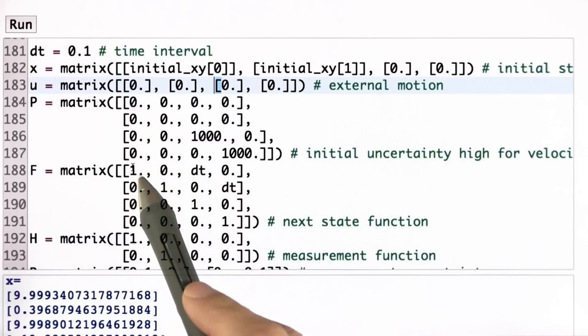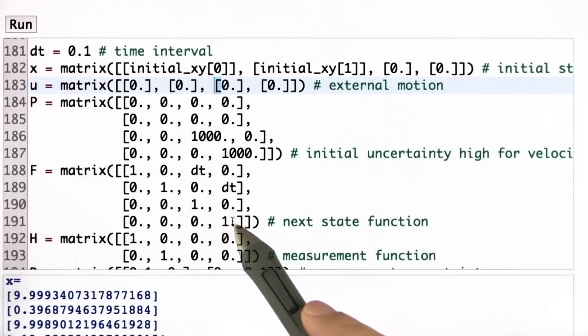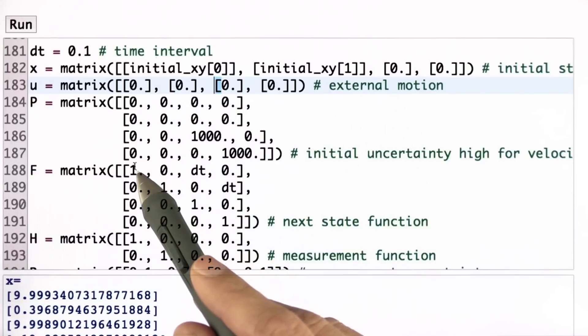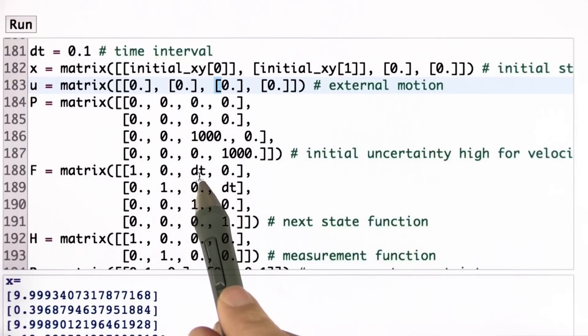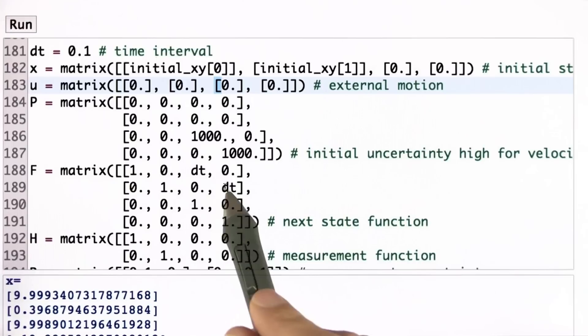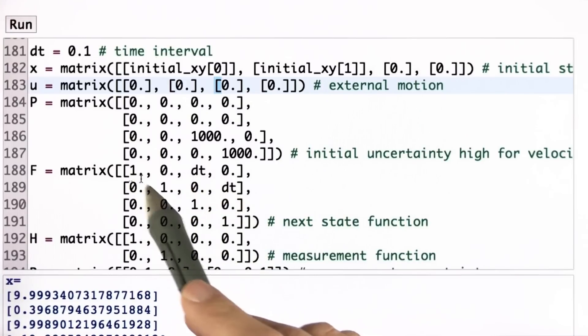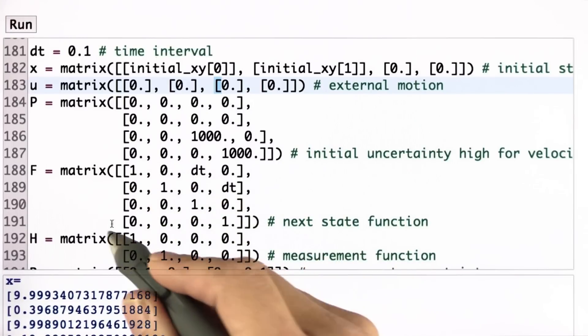Our F matrix is the four-dimensional generalization of the F matrix we had before, where we have one along the main diagonal. This one says that the position is retained in expectation and velocity is retained, and we have two dt's over here. The x dot, which is my third state vector, influences the x by a factor of dt for each time stamp, and the same is true for y dot. So these are the places where our velocities impact our position estimate.